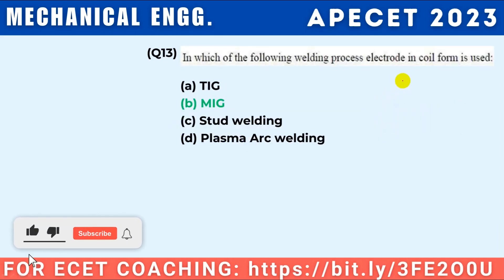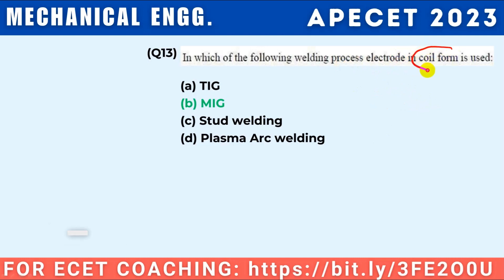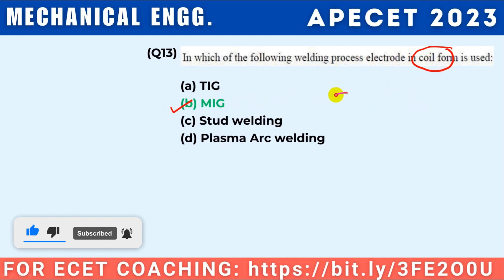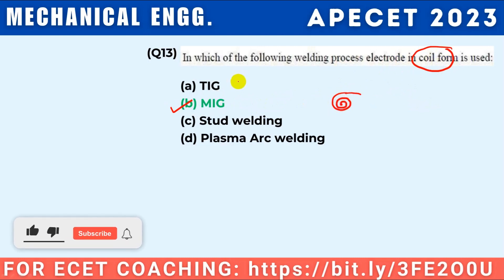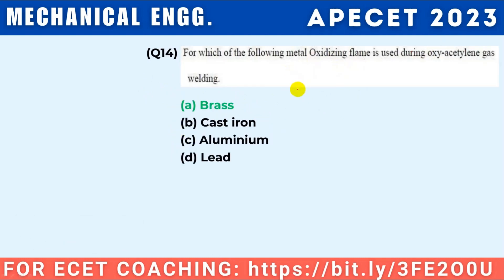In which of the following welding processes is the electrode in coil form used? Very important question — in MIG (Metal Inert Gas) welding, the electrode is used in coil form. In TIG welding, a tungsten electrode is used. So MIG welding is your answer.